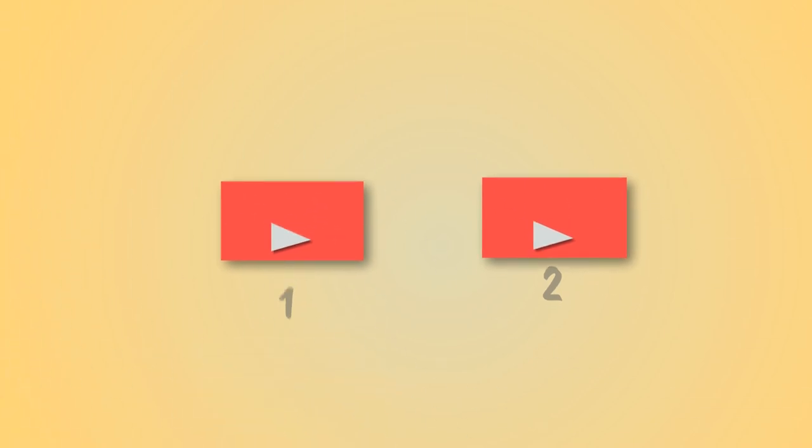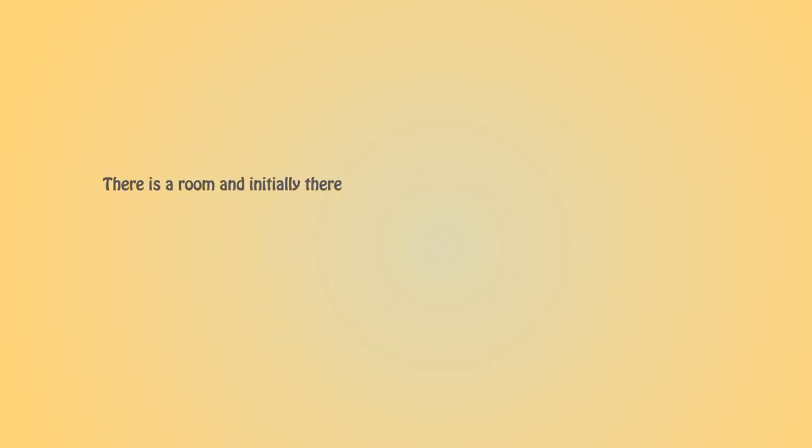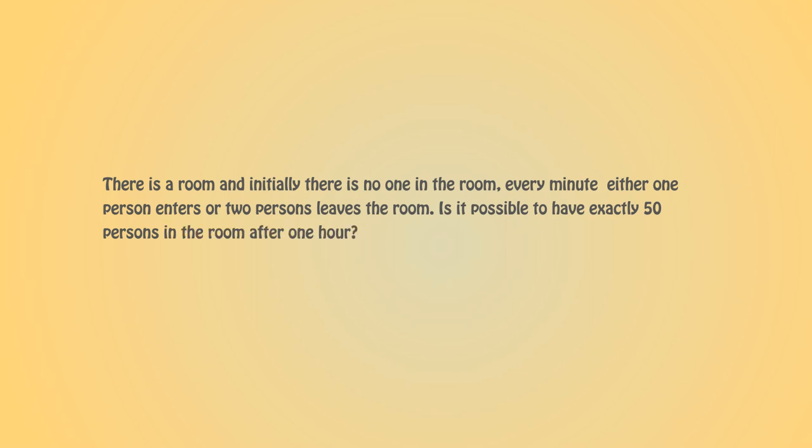Now let's jump into the problem itself and the question is, there is a room and initially there is no one in the room. Every minute either one person enters or two persons leave the room. Is it possible to have exactly 50 persons in the room after one hour?